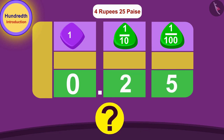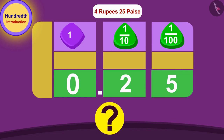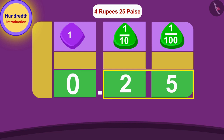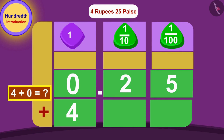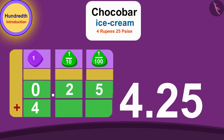Do you know how we read the number written in the hundredth part? We always read the number written in the hundredth part after the decimal point by speaking its digits. The number written here becomes 0.25. Now, if we add 0.25 to 4, what do we get? 4.25! In this way, we can write the new price of Chocobar ice cream as Rs. 4.25 using the decimal point.